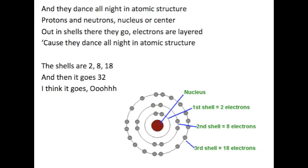And they dance all night in atomic structure. Protons and neutrons, nucleus or center. Out in shells there they go, electrons are layered, 'cause they dance all night in atomic structure. The shells are 2, 8, 18, and then it goes 32, I think it goes, ooh.